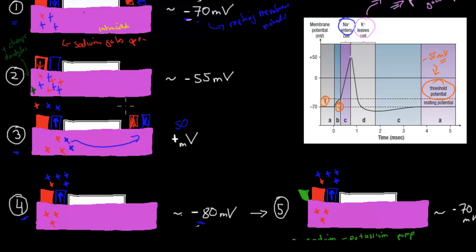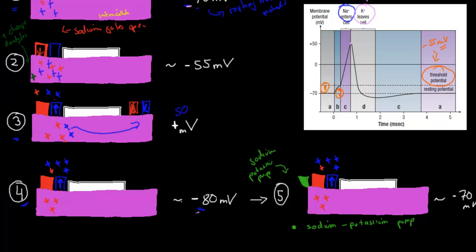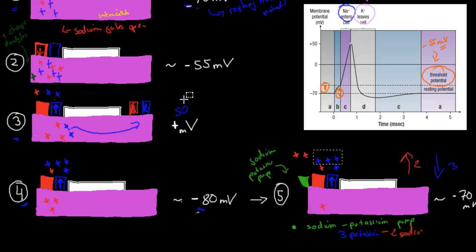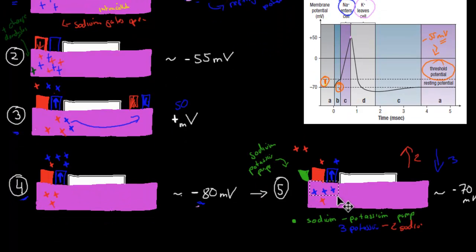Once it dips down to about minus 80 millivolts, the sodium-potassium pumps are activated. These pumps bring everything back to normal. For every three potassiums put back into the cell, two sodiums leave. So two sodiums are pumped out and three potassiums are pumped back in. That returns the membrane potential to minus 70 millivolts — exactly what we had to begin with. So we're back to normal, and ready for the next impulse. That's how it recycles and keeps going.